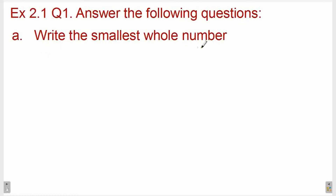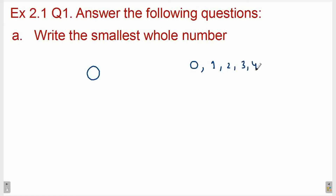First is: write the smallest whole number. We have already discussed in our previous introductory video that the smallest whole number is 0. Whole numbers start from 0, then 1, 2, 3, 4 and so on. So the smallest whole number is 0 — that is the answer.